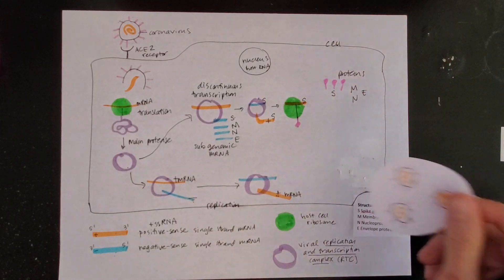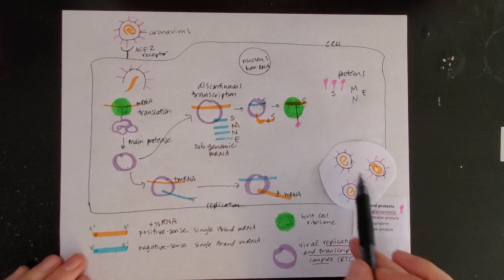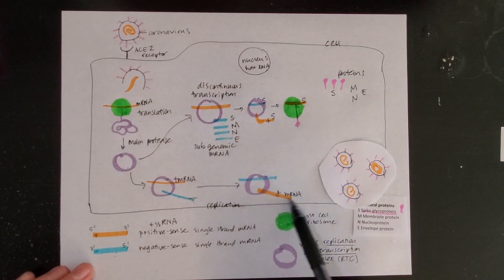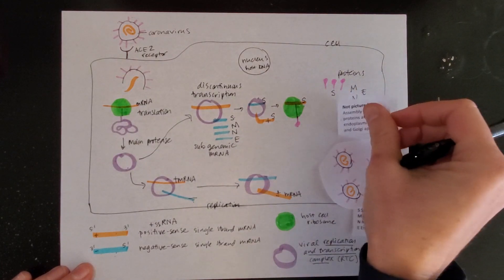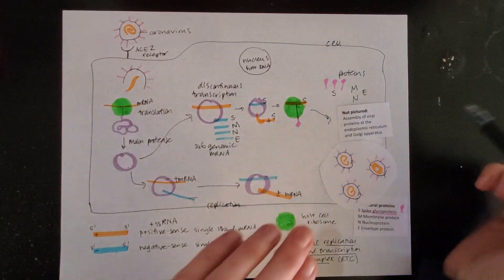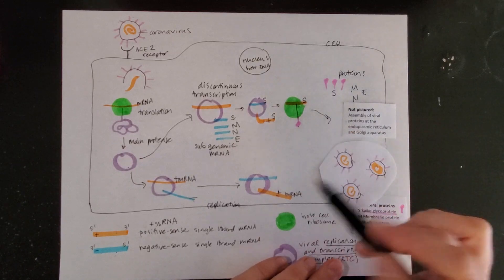I now have all of the components that I need to make these new viruses. I have the structural proteins, I have fresh copies of mRNA. There's a whole bunch of steps I'm going to skip here. We're not going to picture the assembly of those proteins and that mRNA, but they are assembled together.